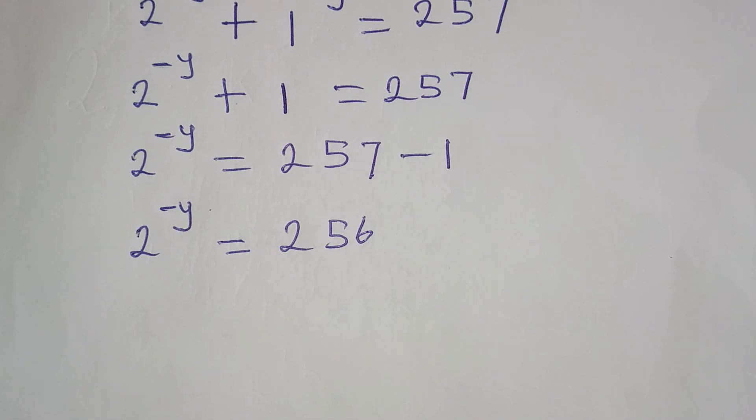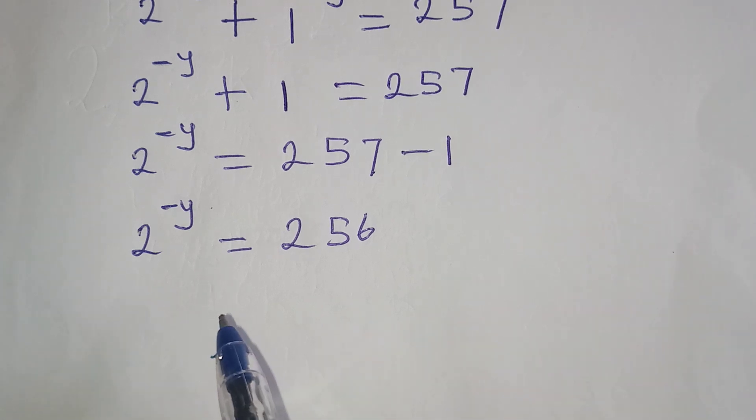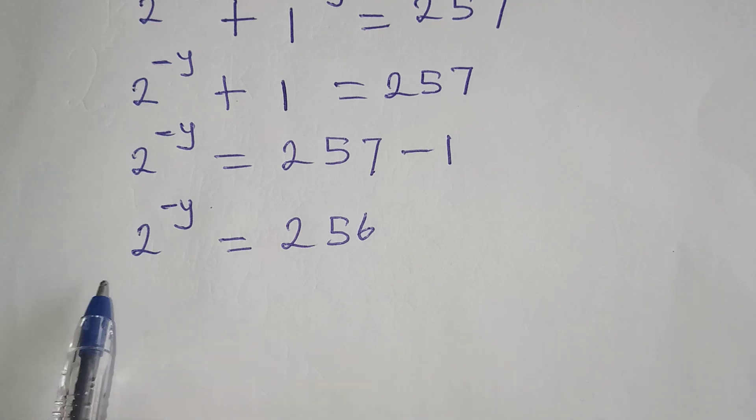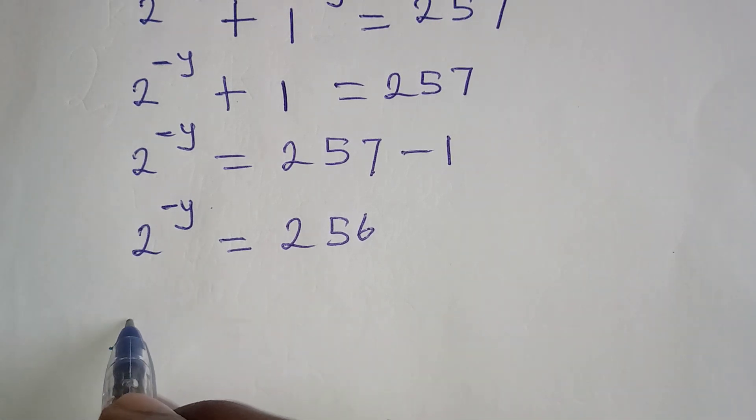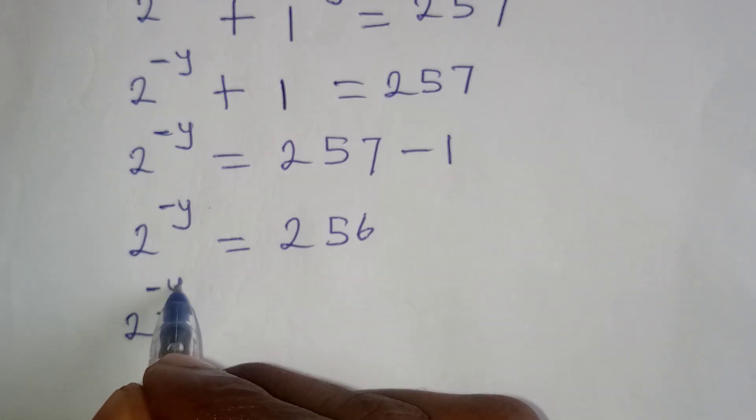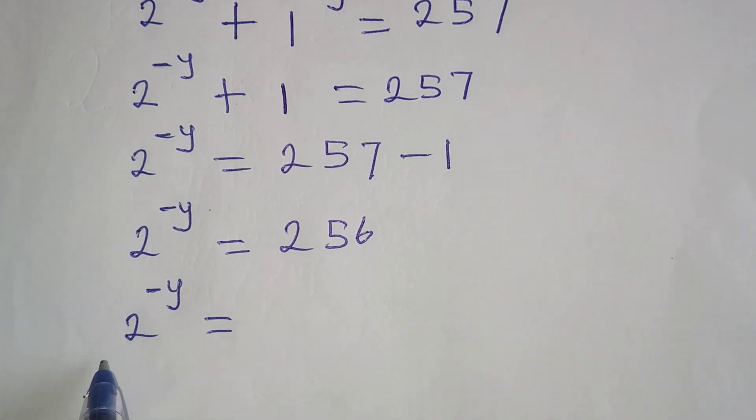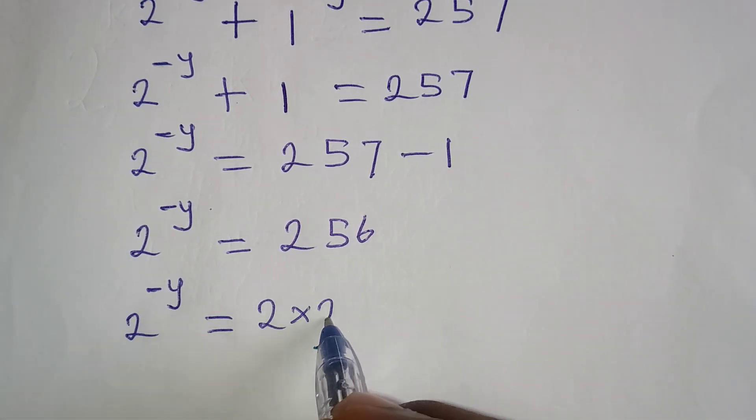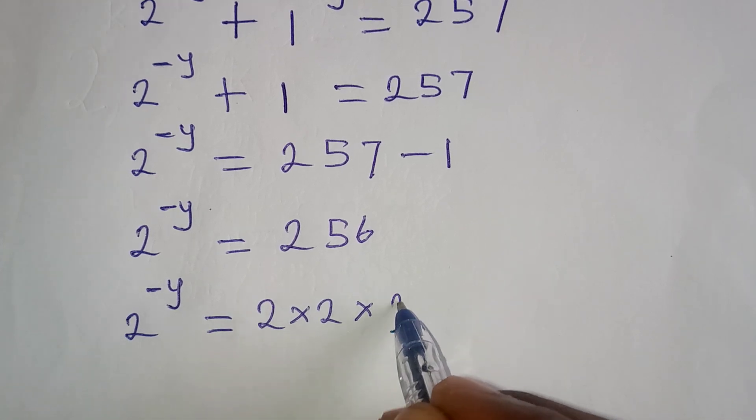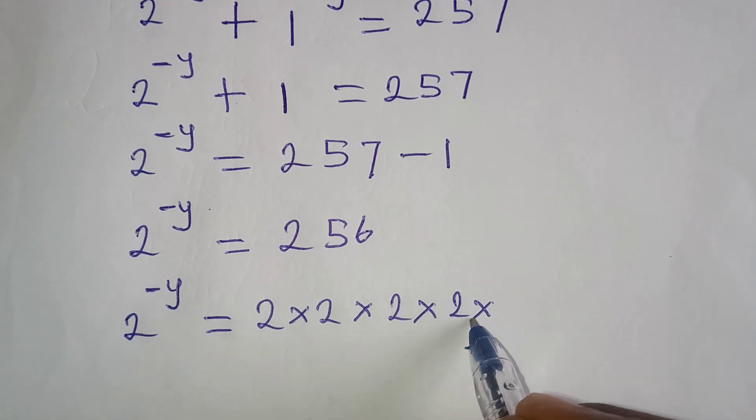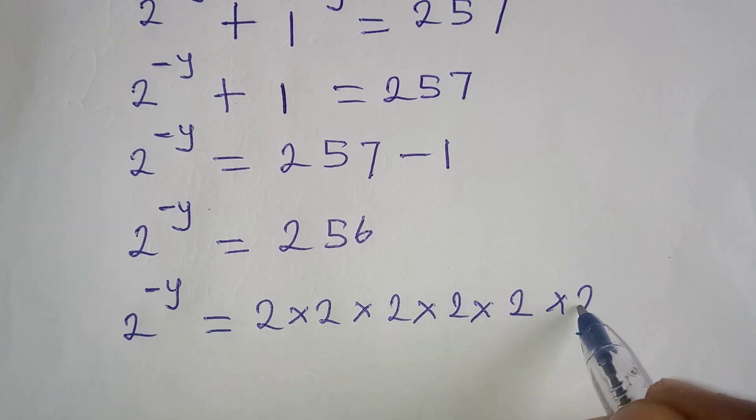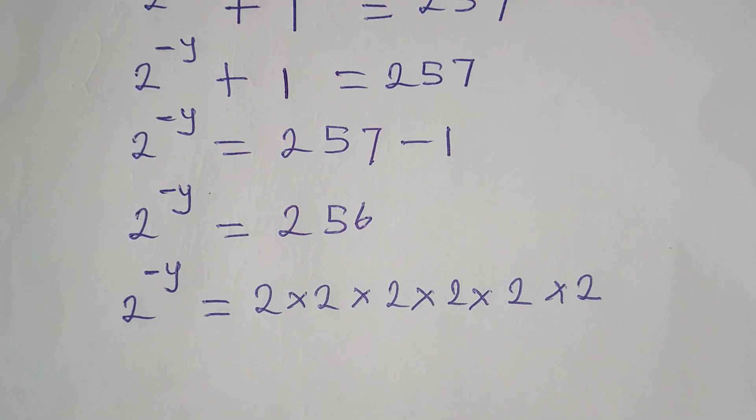And now in this, we are not going to take the log of both sides. Because of that, we will make sure the bases are the same. So we have 2 to the power of negative y. And because we have base 2 here, we have to multiply 2 by itself as many times as possible. So let's try to multiply this and see.